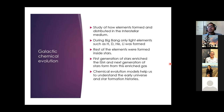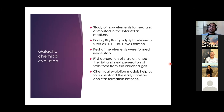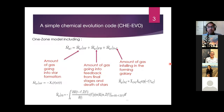Let's start with basics. What is galactic chemical evolution? It's basically the study of how elements were formed and distributed in the interstellar medium. As you know, during the Big Bang, only light elements were formed, and the rest were formed inside stars. The first generation of stars were metal-free or metal-poor, and when they died, they enriched the ISM. The next generation of stars formed from this enriched gas, and this process continues. These chemical evolution models help us understand the early universe and the various star-forming histories of different components of our own galaxy or other galaxies.